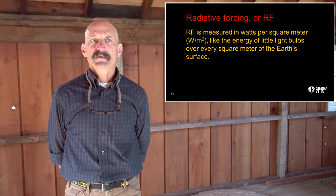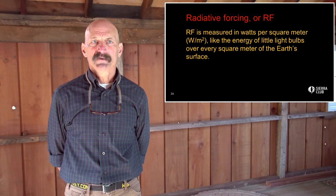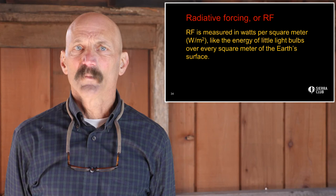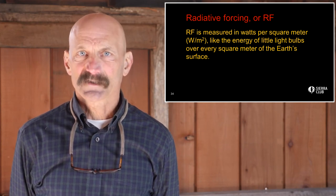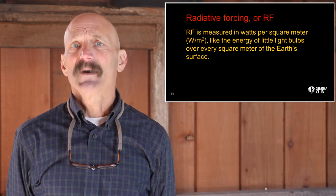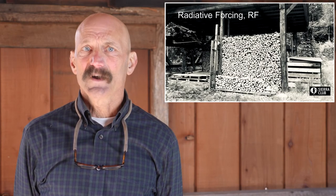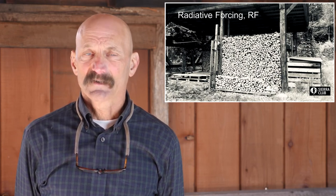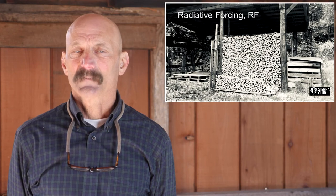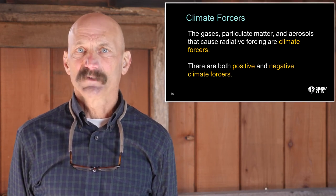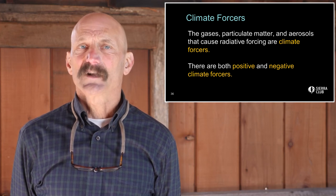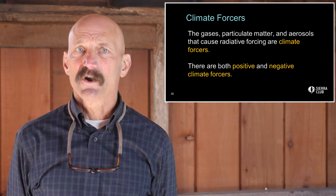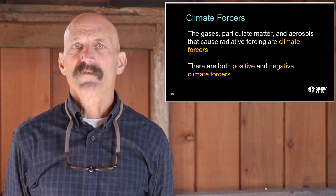We're used to talking about the quantity of greenhouse gases in the atmosphere in units of parts per million of atmospheric CO2. Radiative forcing is the heating effect of those greenhouse gases. Think of it this way: a given quantity of firewood stacked in the woodshed results in a known heating effect when that firewood is burned. The gases, particulate matter, and aerosols that cause radiative forcing are called climate forcers, and there are both positive and negative climate forcers.